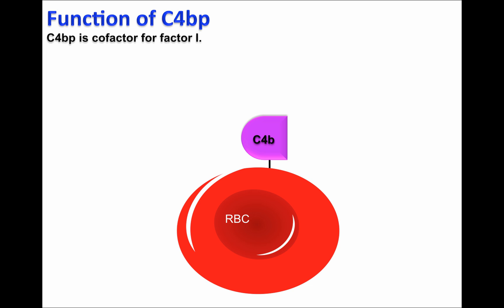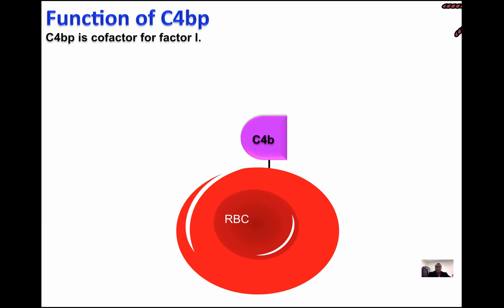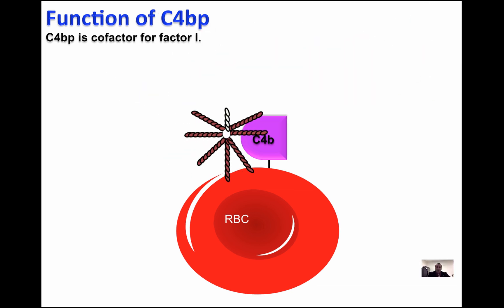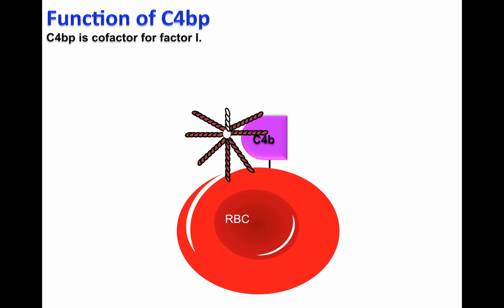Therefore, C4B must be inactivated in order to avoid lysis. C4BP, the soluble complement-regulatory protein, will protect red blood cells from being lysed. The way that C4BP protects is that it will recognize C4B and will allow factor I to perform its function.